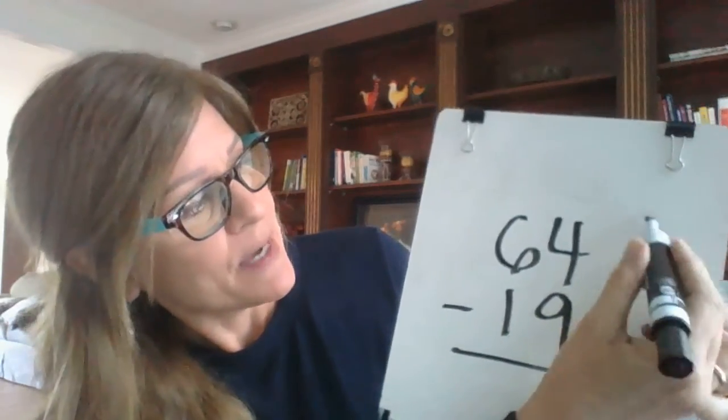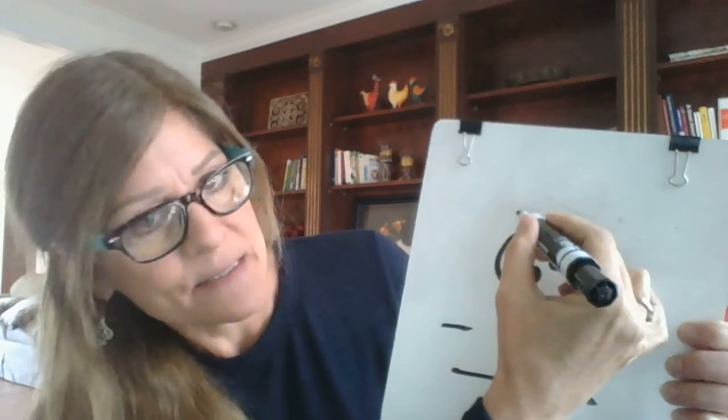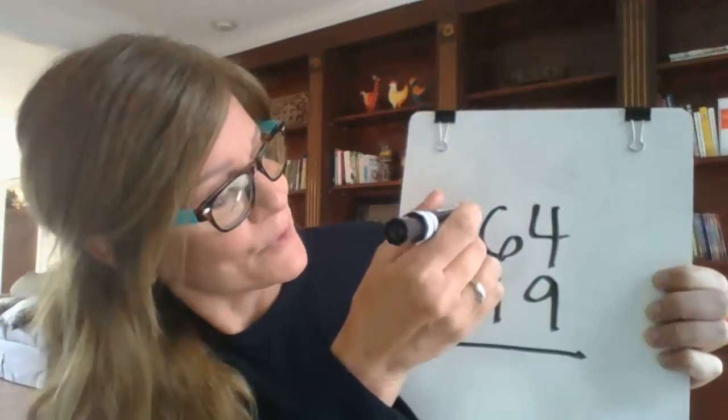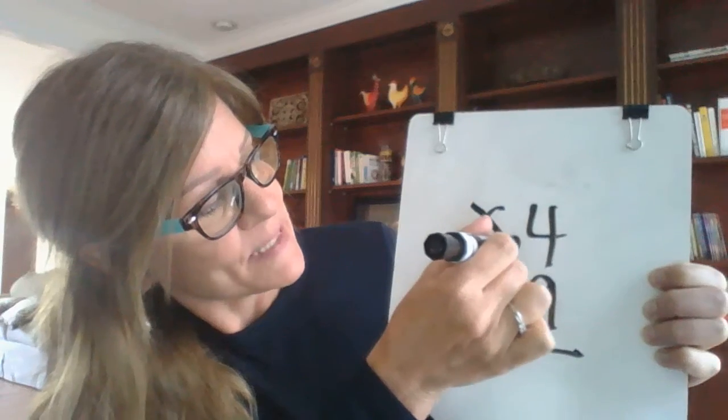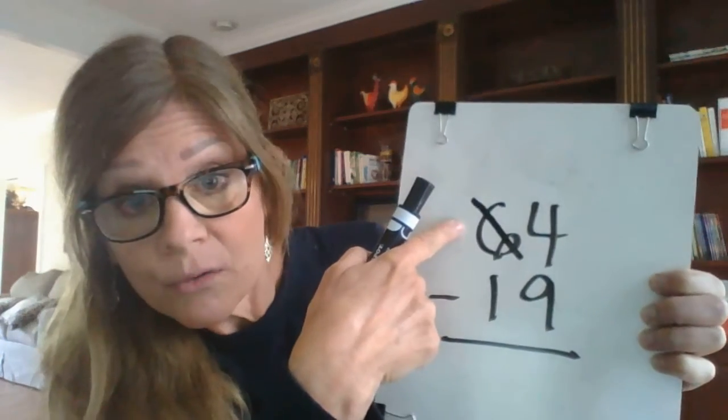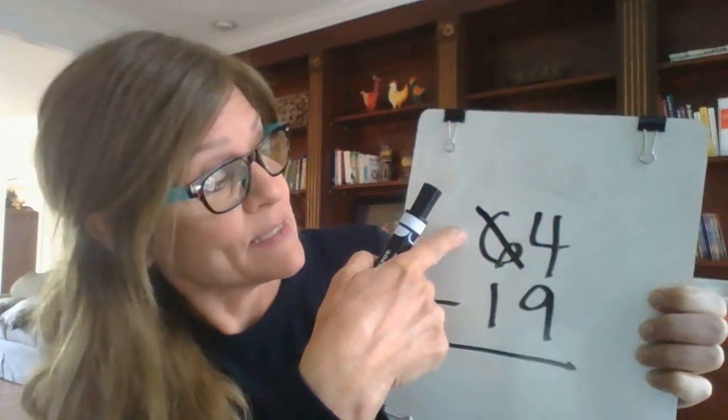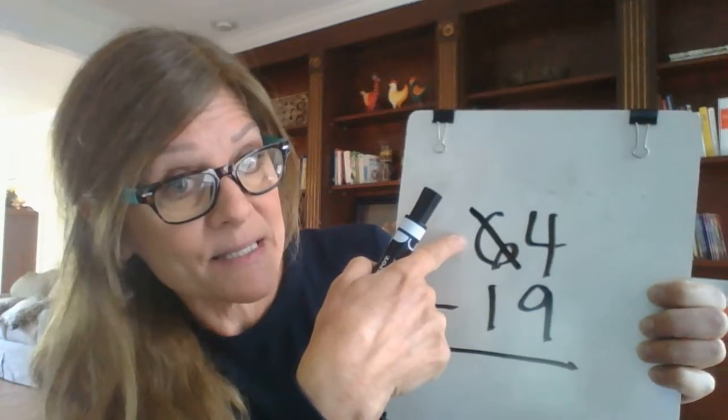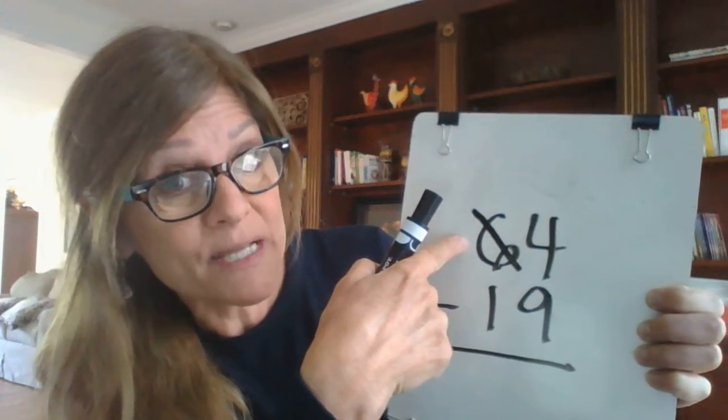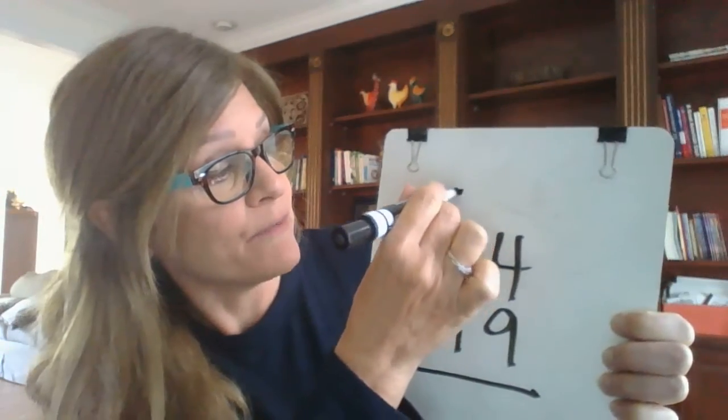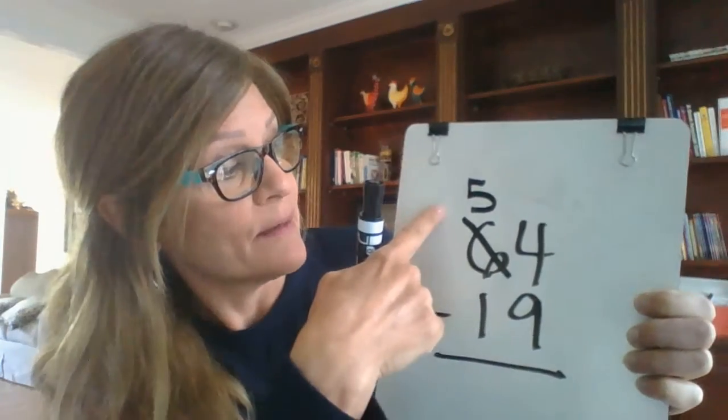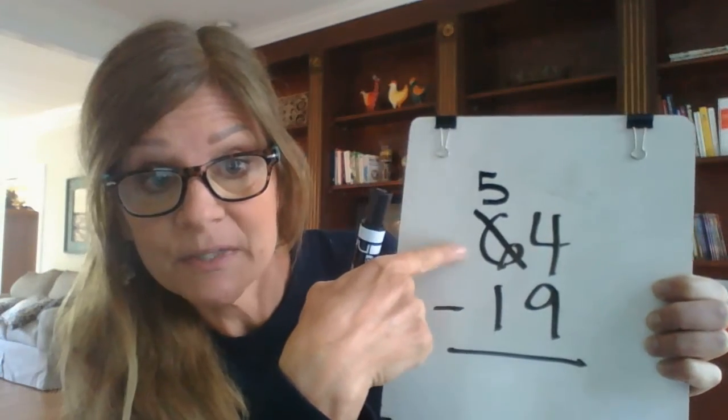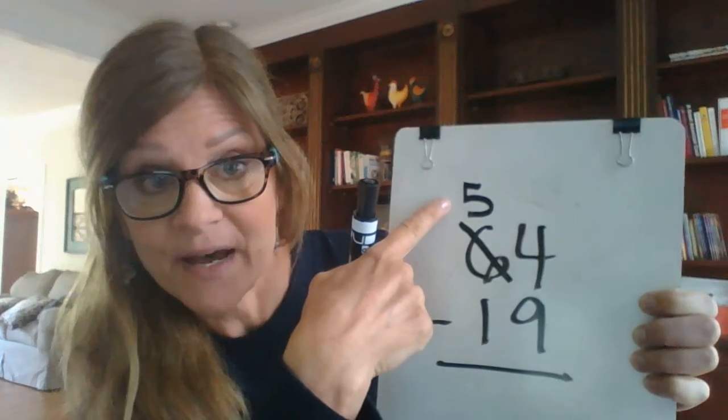Okay, to regroup, I'm going to go over here to my tens column. Sorry, I don't know if you can see that. I'm going to go to my tens column. I'm going to borrow or regroup a 10 from my tens column. 64 has 6 tens. I'm going to take one of those tens away. So if I take one away, I'm going to have 5 tens left because 6 minus 1 is 5.